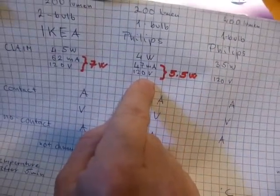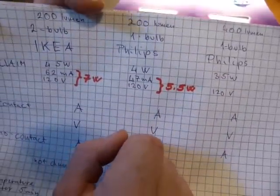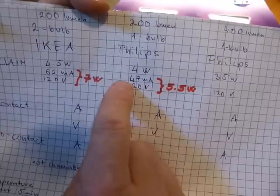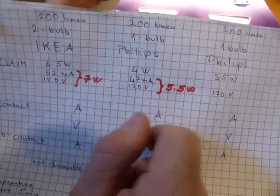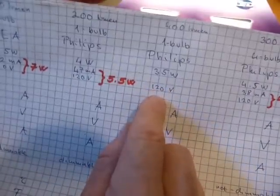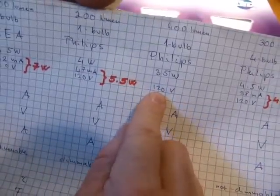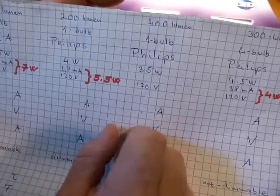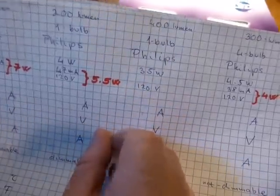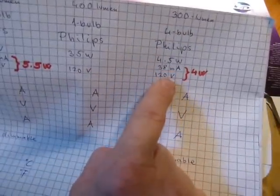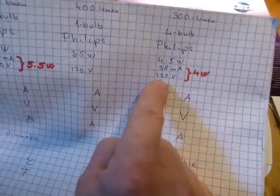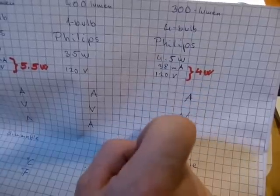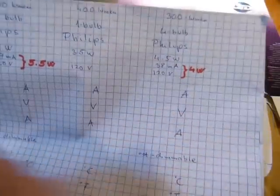The same discrepancies found on the one bulb Philips design. They claim 47 milliamps, if you multiply 120 with 0.047, it's going to get 5.5 watts. For the 35 watt bulb, they don't even state the amperage, but they claim 35 watts. I'll measure and calculate. For the last one, that's pretty much spot on. They claim 120 volts and 38 milliamps, and that is actually 4 watts, but they claim 4.5.